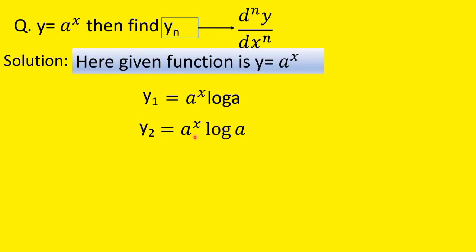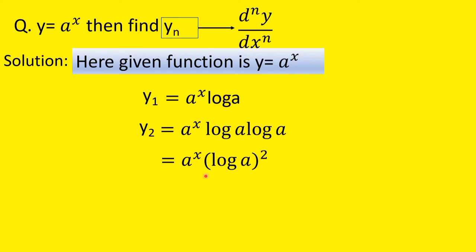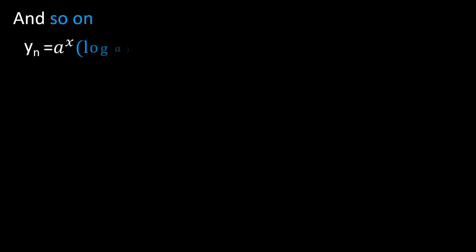So y2 = a^x (log a)². In a similar way, y3 = a^x (log a)³. And so on for y4 and higher derivatives. Finally, for the function y = a^x, the general nth derivative is yn = a^x (log a)^n.